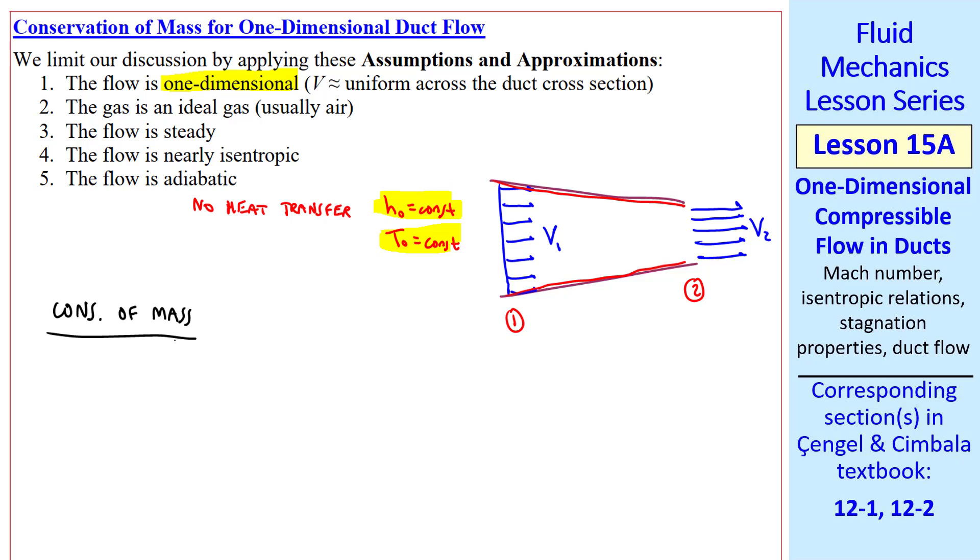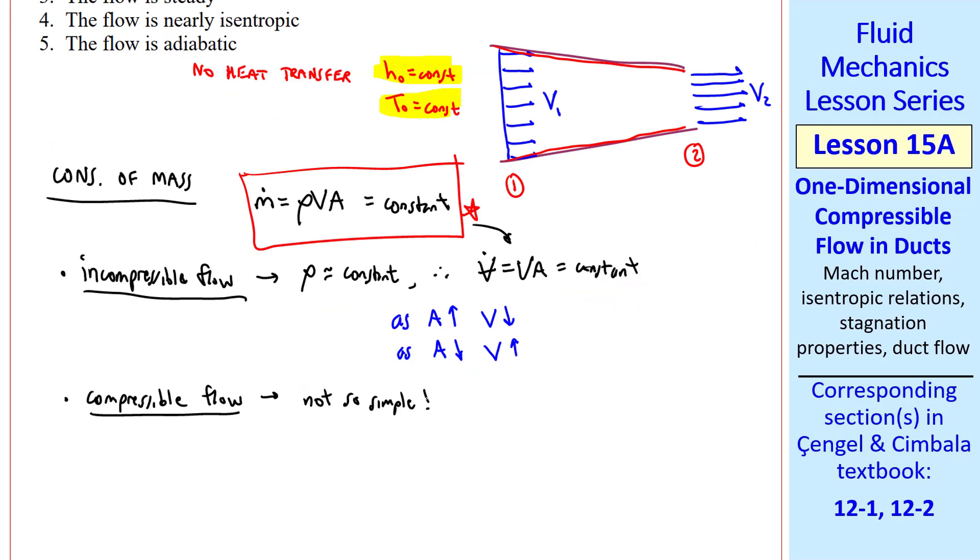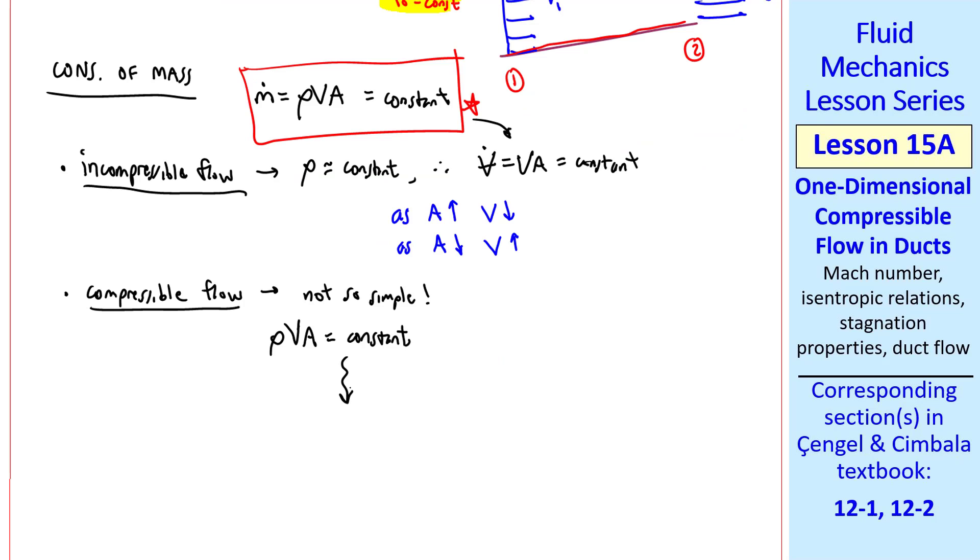Now consider conservation of mass. For this one-dimensional flow, M dot equals rho VA and this must be constant. For incompressible flow, we approximate rho as constant, so this equation simplifies to V dot volume flow rate equal VA equal constant. So as area goes up, V goes down, and as area goes down, V goes up. But for compressible flow, it's not so simple. We have to keep density in our conservation of mass equation. After some algebra, this equation reduces to dV/V equals 1/(Ma^2 - 1) times dA/A.